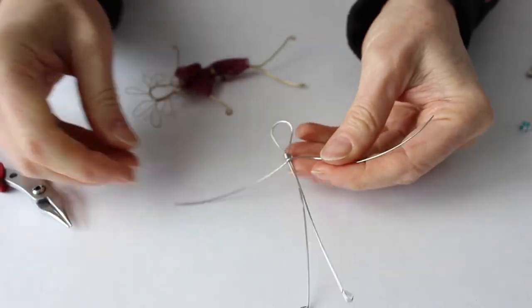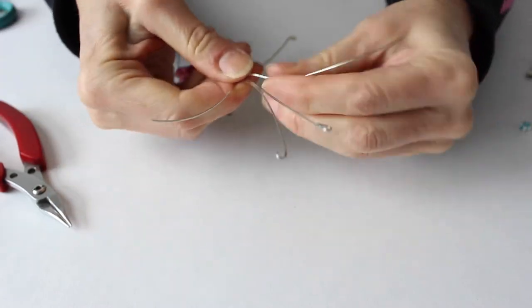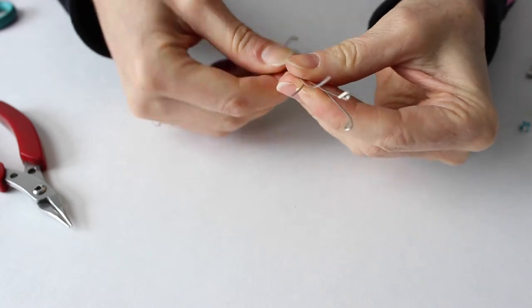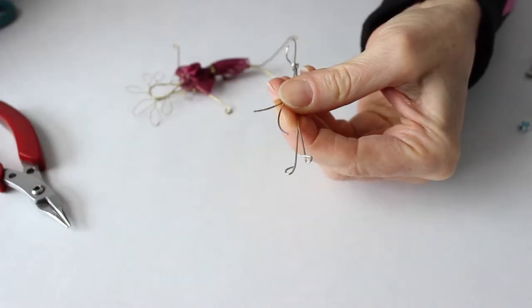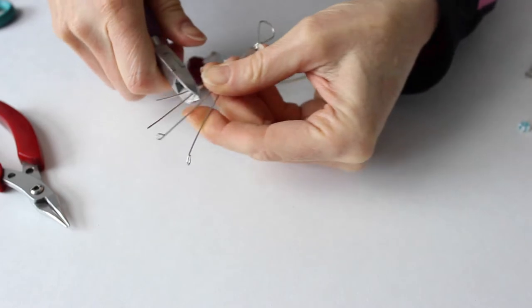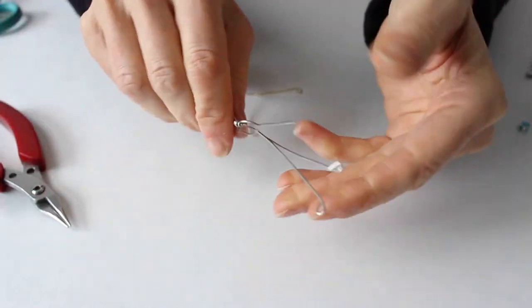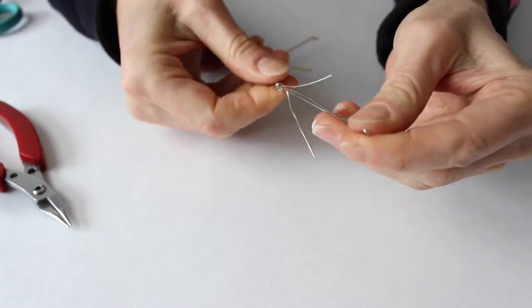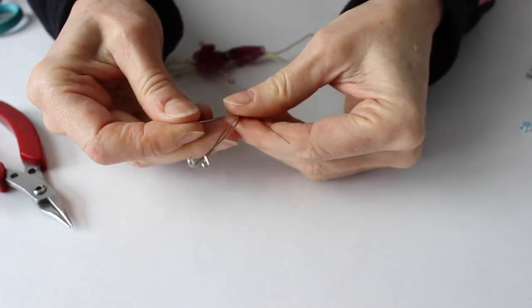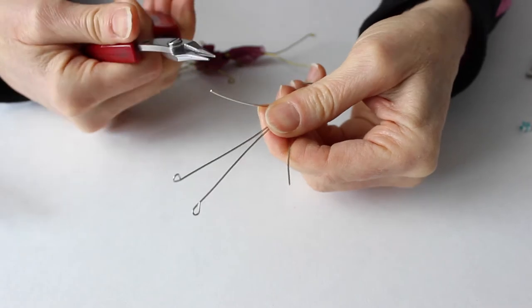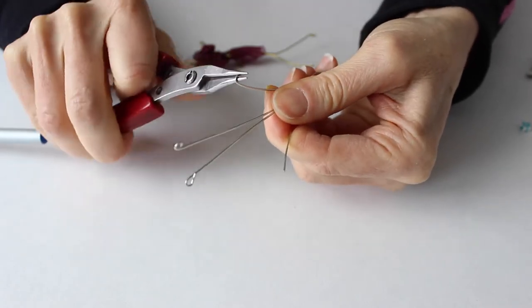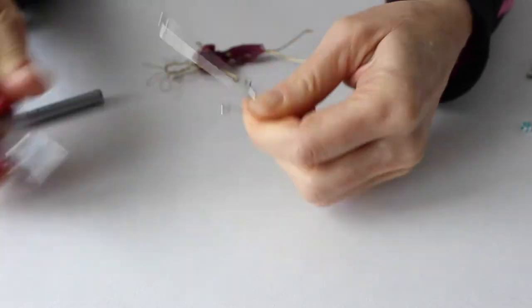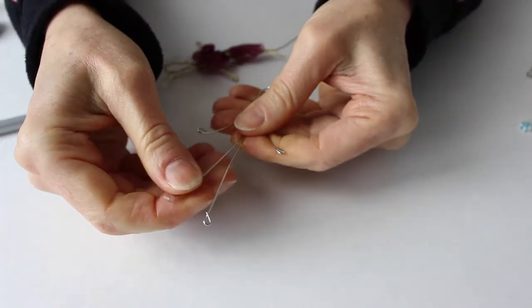The same thing for the arms. However long you want the arms, you want them more or less the same size, so you can bend it down like that. Then you can just bend these up like that. There you have your little figure.